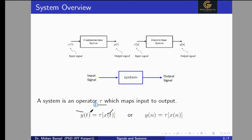That output is our desired output, which is Y(T) or the response. In a similar way, for the discrete time signal, we are giving X(N), which is the discrete time signal, passing it through the system T, and we are receiving Y(N) as the output.